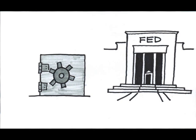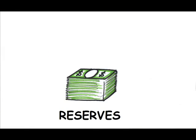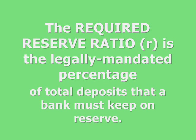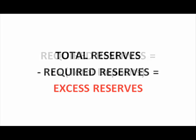Banks are legally required to keep a certain amount of their total deposits — that is, the total of what their depositors have entrusted them with — on reserve. This can be either as vault cash or on deposit at the Fed, as long as it is accessible if the depositors ask for their money. The required reserve ratio, R, is the legally mandated percentage, so the total amount of required reserves is R times total deposits. The difference between the bank's total reserves and its required reserves are the excess reserves — the amount the bank is holding above and beyond the legal requirement.